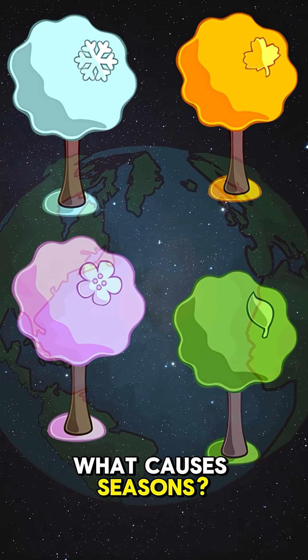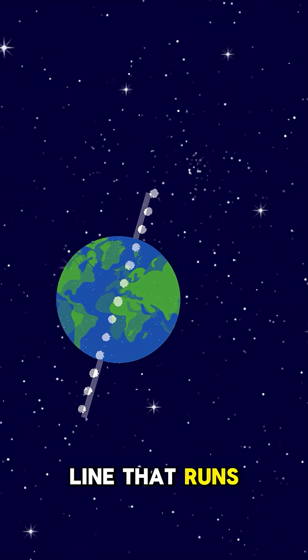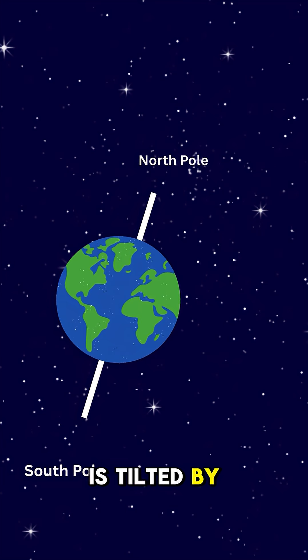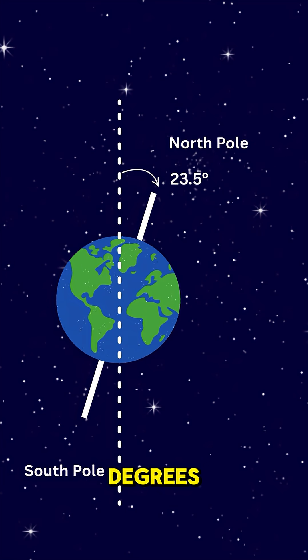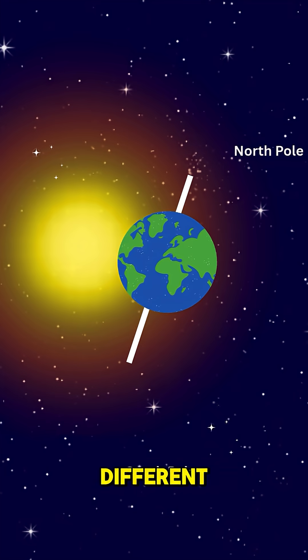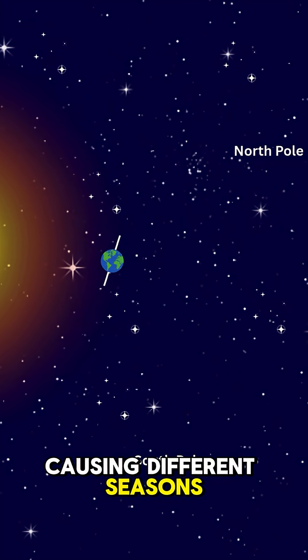What causes seasons? The Earth's axis, which is an imaginary line that runs through the center from North Pole to South Pole, is tilted by 23.5 degrees. As the Earth orbits the Sun, the tilt means different parts of Earth receive more or less sunlight during the year, causing different seasons.